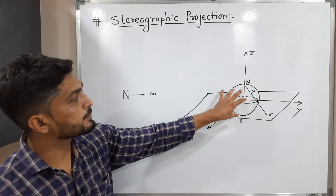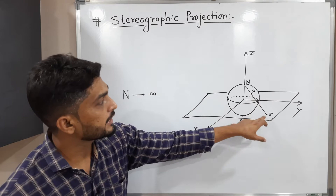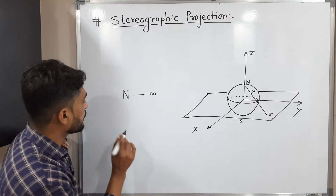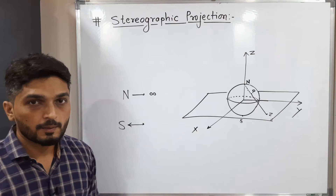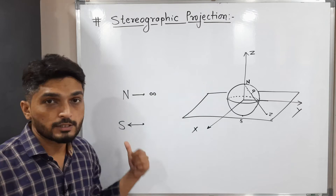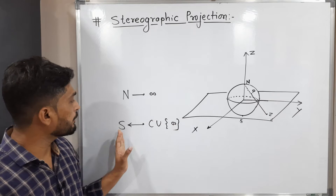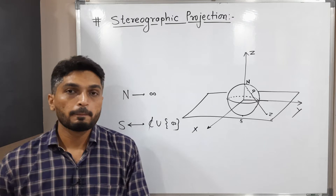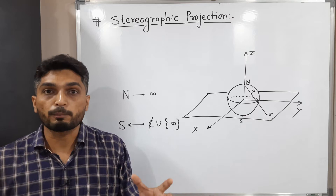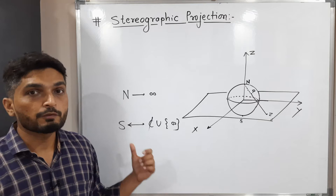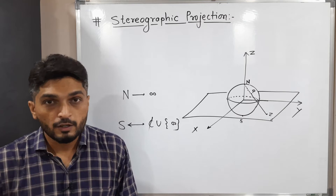For the remaining points of the sphere we can find corresponding points on the complex plane — for point P we have z, for point Q we have some w, and so on. So in a simple way, we can say there is a one-to-one correspondence between all points of the sphere S and C union infinity. We add infinity here since the north pole maps to infinity and remaining points of S map to C, the set of complex numbers. We call this the extended complex plane since we have added infinity.